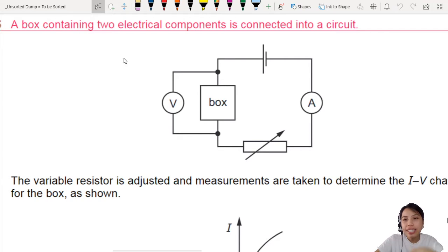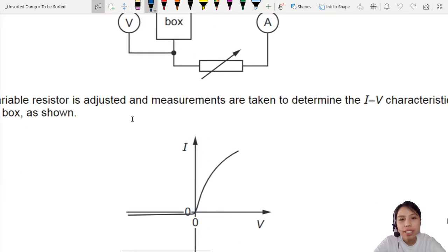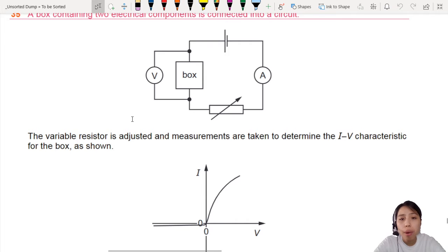A box is connected inside a circuit and what is in the box? We don't know. We're trying to figure that out. So the variable resistor is adjusted and measurements are taken to measure the IV for the box.